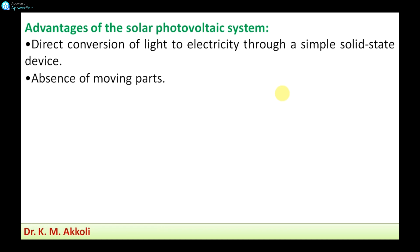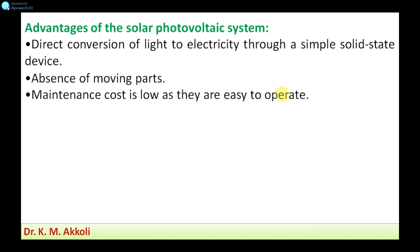The next advantage is the absence of moving parts. As there are no moving parts — only stationary solar cells — no lubrication and no maintenance is required. Maintenance cost is low, and they are easy to operate. The maintenance of the solar panels and the system that converts direct current into electricity is very less. They also do not produce pollution.